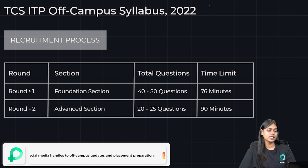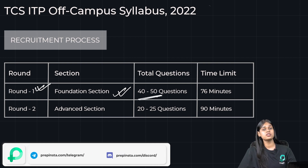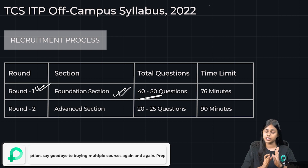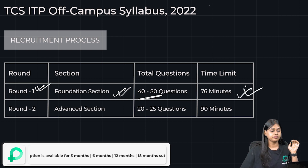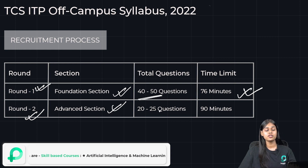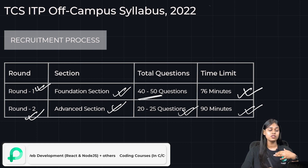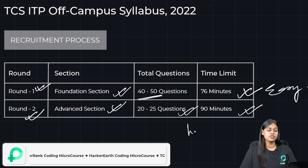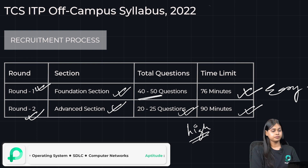Let's talk about the recruitment process in detail. Round 1, the Foundation Section, may have 40 to 50 questions — the number is variable. The time limit is 76 minutes. For Round 2, the Advanced Section, you will have 20 to 25 questions and a total of 90 minutes. The Foundation Section will be easy to medium in difficulty, whereas the Advanced Section is going to be high in difficulty.